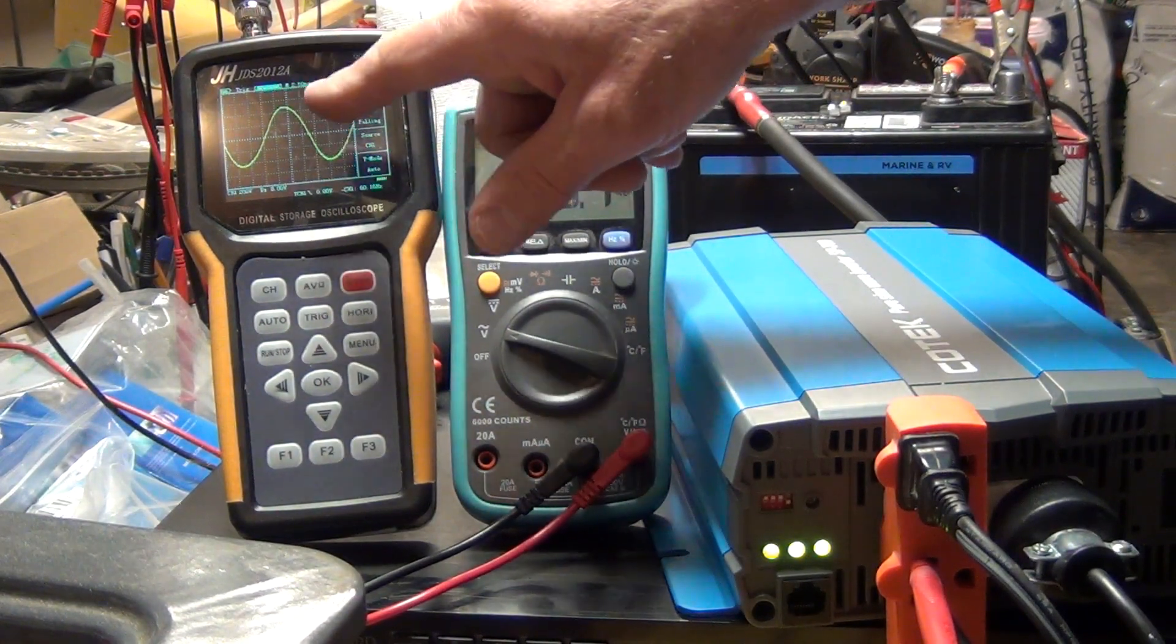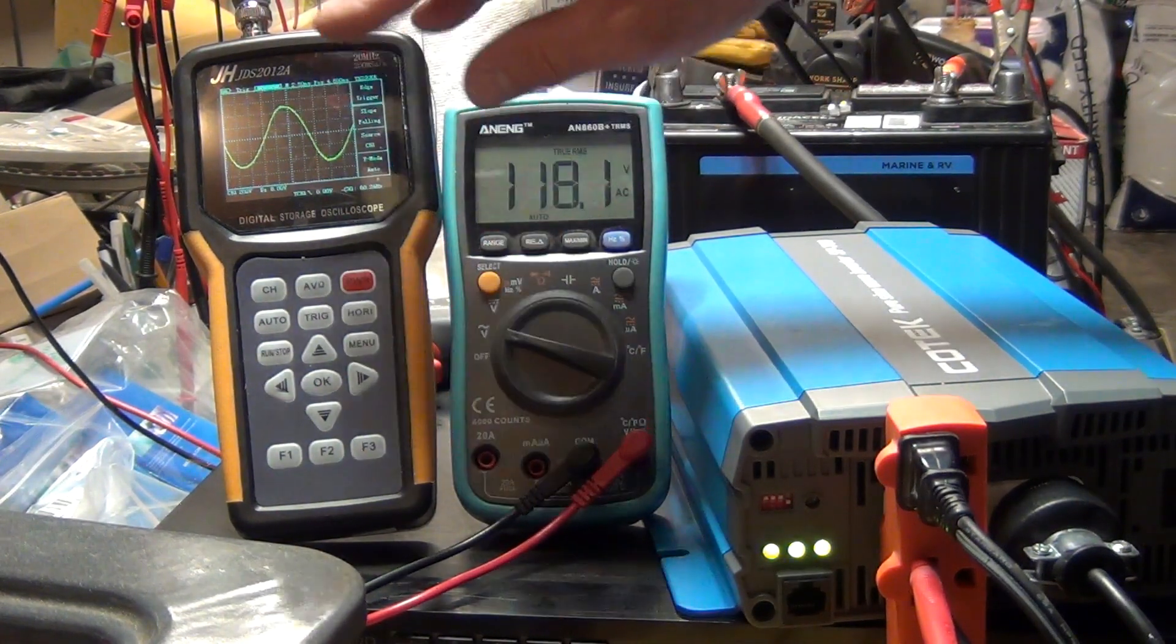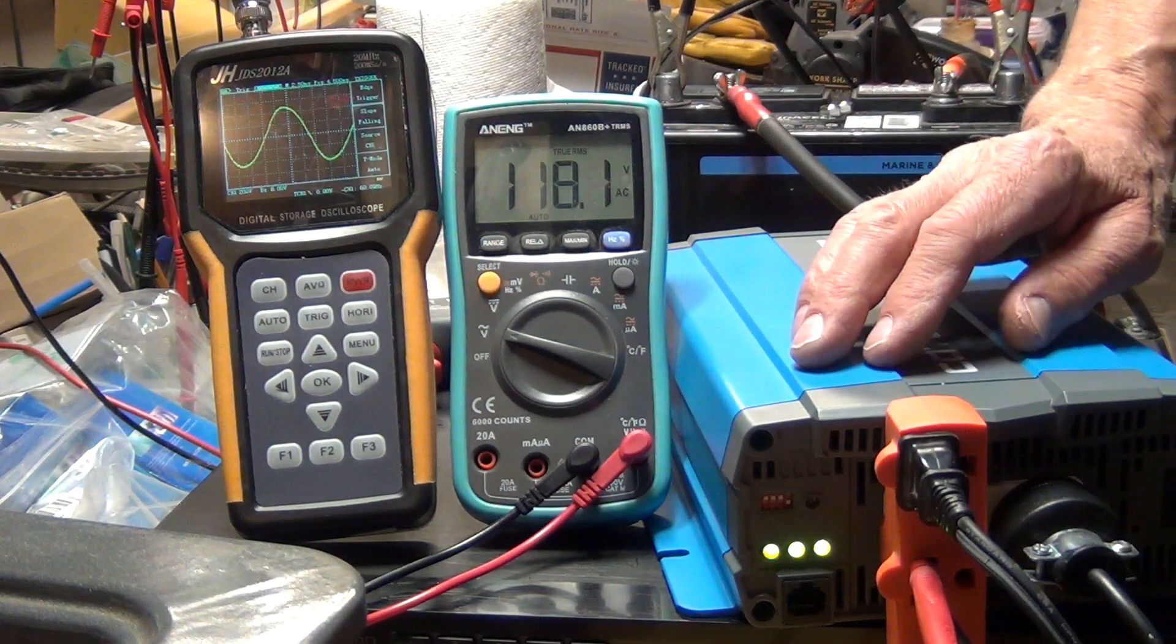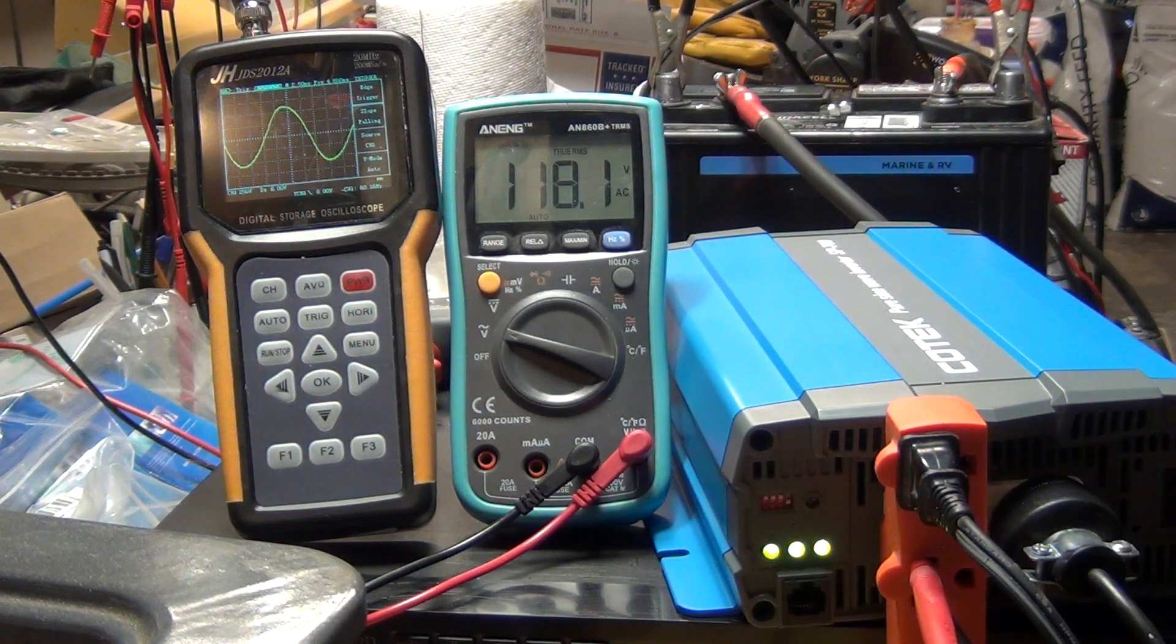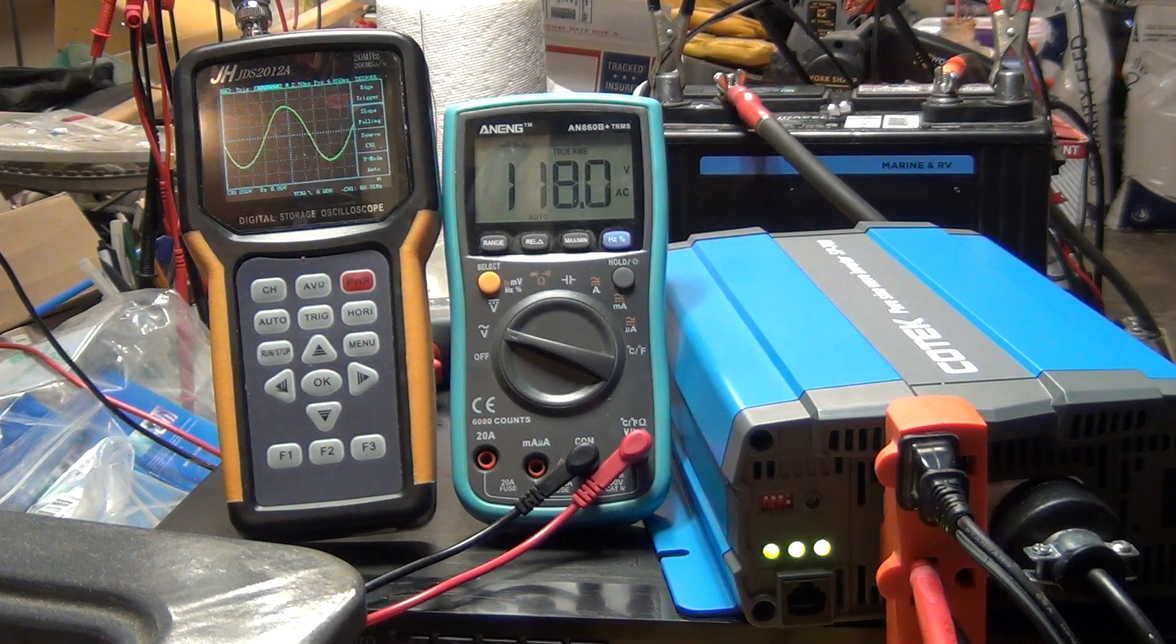And this is 700 watt inverter so it's handling it pretty well. And this is amazing that the sine wave is still not crooked like on the Go Power. And I'm gonna throw another 100 watt on it, actually I can throw another 100 and then 170 on top. So this is going to be 100, and now 170.